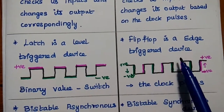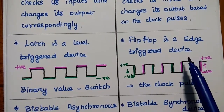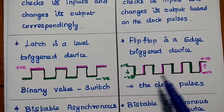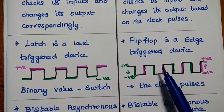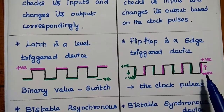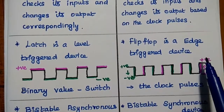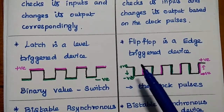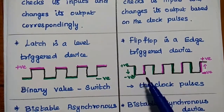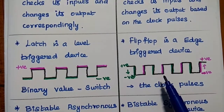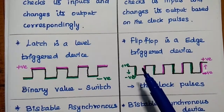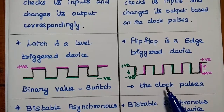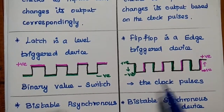Flip-flop is an edge-triggered device. There are two types of edge-triggering: one is negative to positive edge-triggering, and another one is positive to negative edge-triggering. Edge-triggered represents the change of clock pulses.